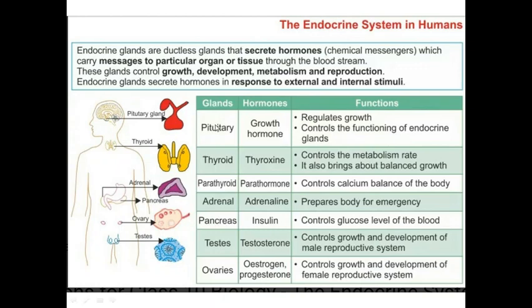These glands control growth, development, metabolism, and reproduction. Endocrine glands secrete hormones in response to external and internal stimuli. The most important gland is the master gland — the pituitary — which is attached to the brain and secretes growth hormone. The function of growth hormone is to regulate growth and control the functioning of other endocrine glands.